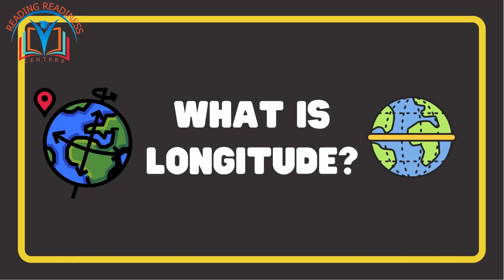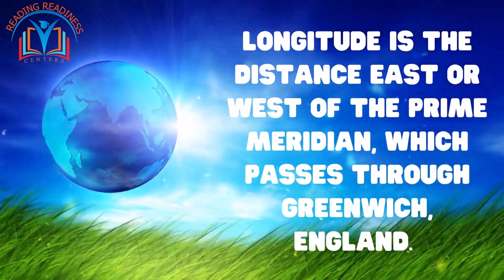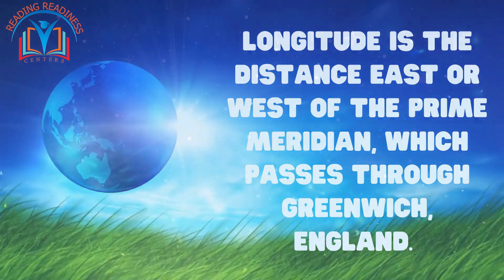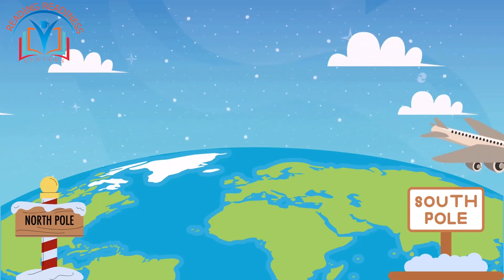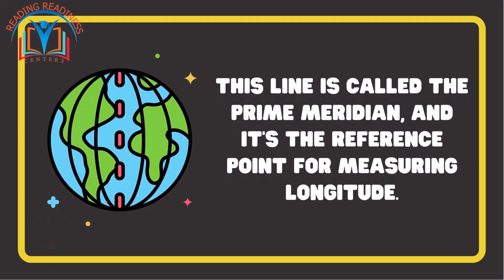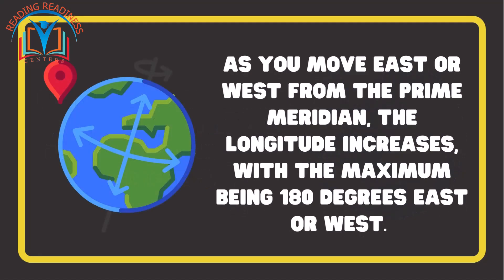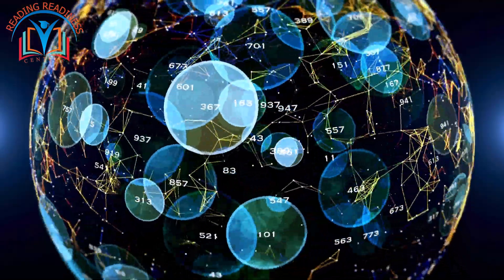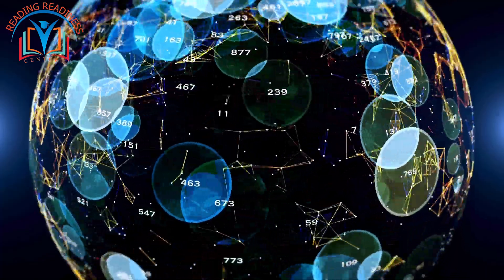Now let's talk about longitude. Longitude is the distance east or west of the prime meridian, which passes through Greenwich, England. Imagine a line running from the north pole to the south pole, dividing the earth into eastern and western hemispheres. This line is called the prime meridian, and it's the reference point for measuring longitude. Longitude is measured in degrees, with the prime meridian being zero degrees. As you move east or west from the prime meridian, the longitude increases, with the maximum being 180 degrees east or west. This means that the earth is divided into 360 degrees of longitude, with each degree representing a distance of approximately 69 miles or 111 kilometers.